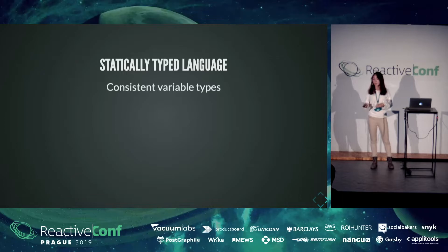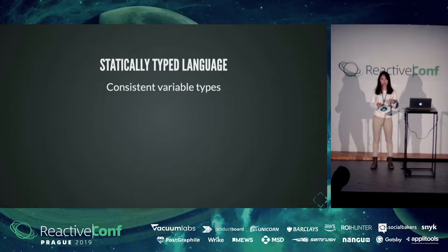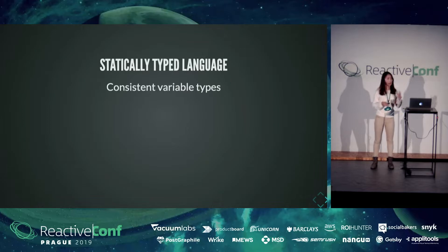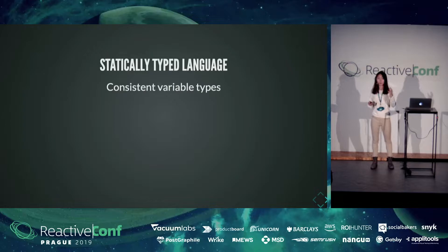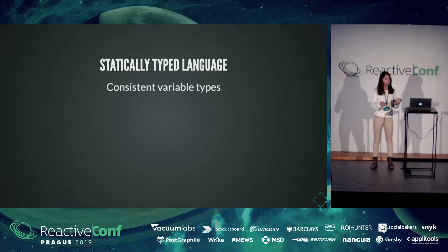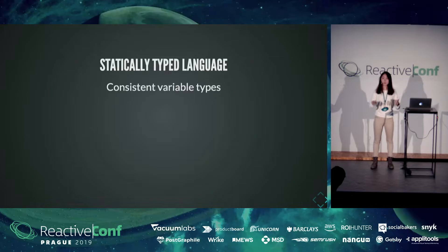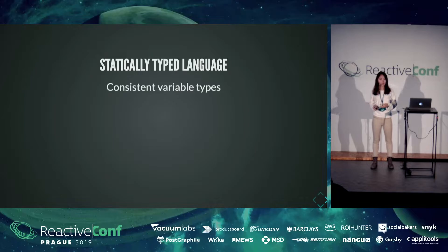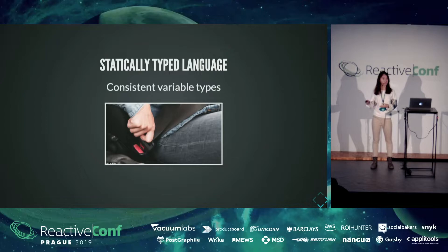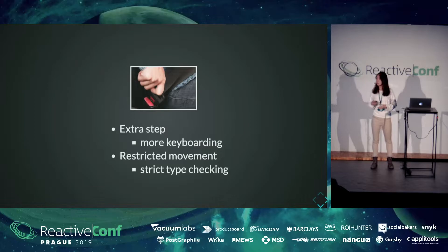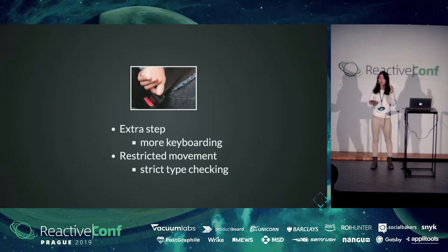Rust is a statically typed language, which means the computer would always make sure that your variable is used in a consistent way. So, for example, a Boolean can always only be a Boolean. It can never be accidentally added to a number, like in JavaScript. So, if you have experience with a statically typed language before, then the Rust type system should feel natural and intuitive for you. But if you are diving in from a dynamically typed language like JavaScript, then you can think of the Rust type system as something like you finally got a seat belt in your car. There are some extra steps you need to take. You will be typing more, defining the types, and your movement will be kind of restricted.